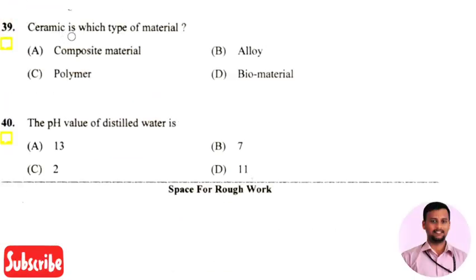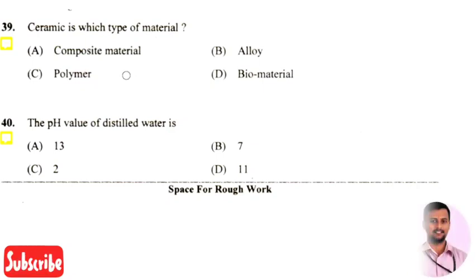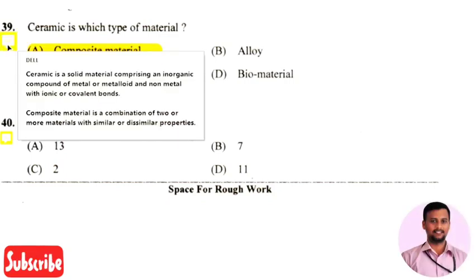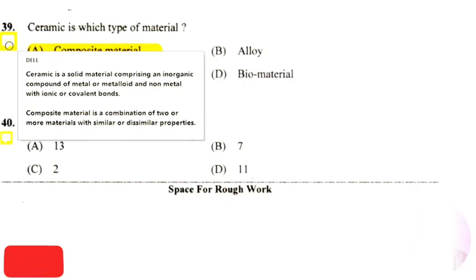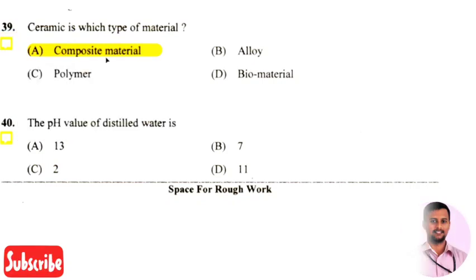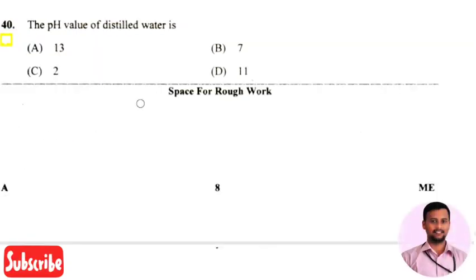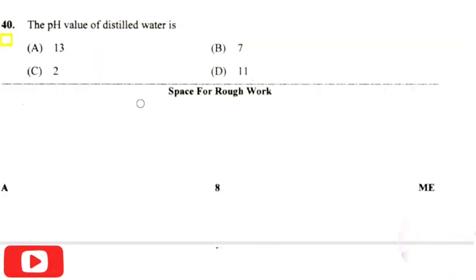The next question is: ceramic is which type of material — the right answer is option one, that is composite material. A ceramic is a solid material comprising an inorganic compound of a metal or metalloid and a non-metal, with ionic or covalent bonds.